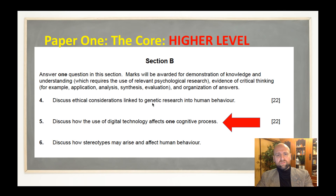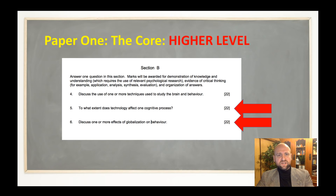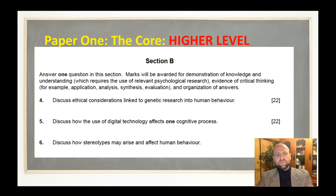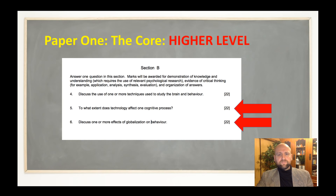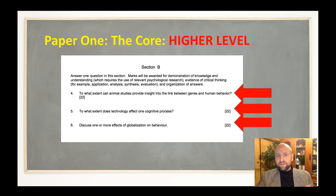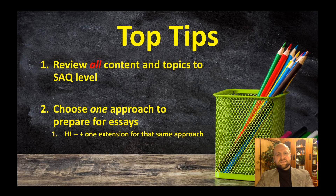If you've studied the biological approach and the biological extension on animal research, you're sorted — you don't need to worry about digital technology. If cognitive is your essay approach and you've studied that extension, you're prepared no matter which question comes up. Even if all three questions are based on extensions — animal studies, technology, and globalization — the advice stays the same: choose one approach for the essays, covering all content and topics plus one extension for that same approach.